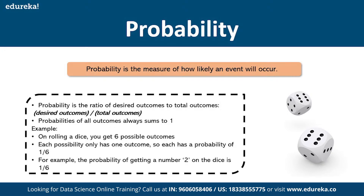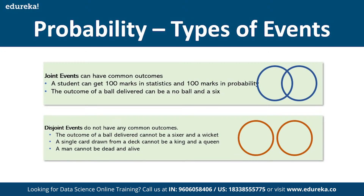There are different types of probability. Disjoint probability refers to events where one event does not influence another. For example, the probability of a student getting 100 marks in statistics versus probability — these are independent. You can clearly identify disjoint events from Venn diagrams where the event sets do not overlap.